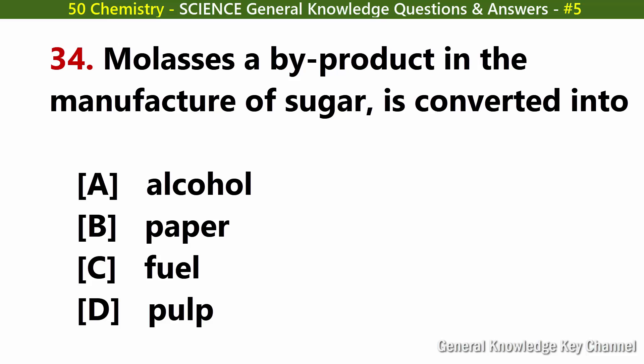Molasses, a by-product in the manufacture of sugar, is converted into. Answer A: Alcohol.